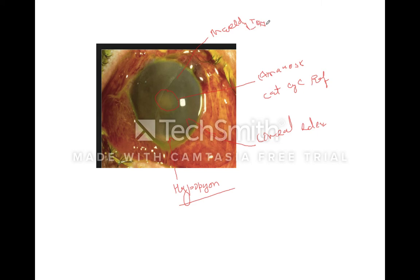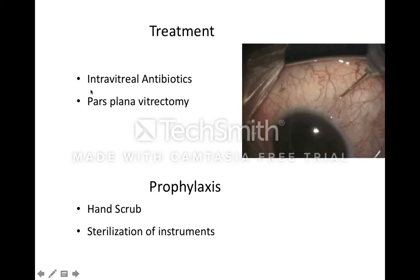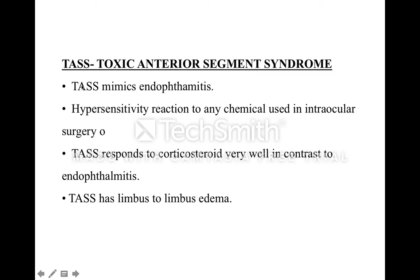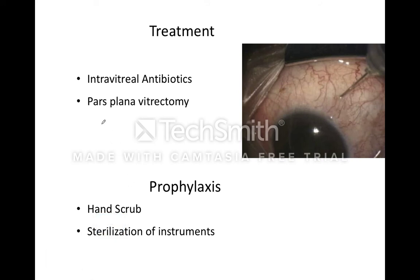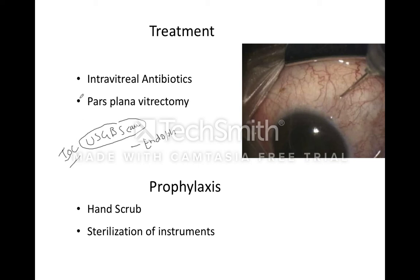For the treatment of endothalmitis, the first thing you do is a USG B-scan. Through the USG B-scan, you can see spikes in the vitreous cavity, which helps confirm the diagnosis of endothalmitis. The USG B-scan is the investigation of choice for endothalmitis.